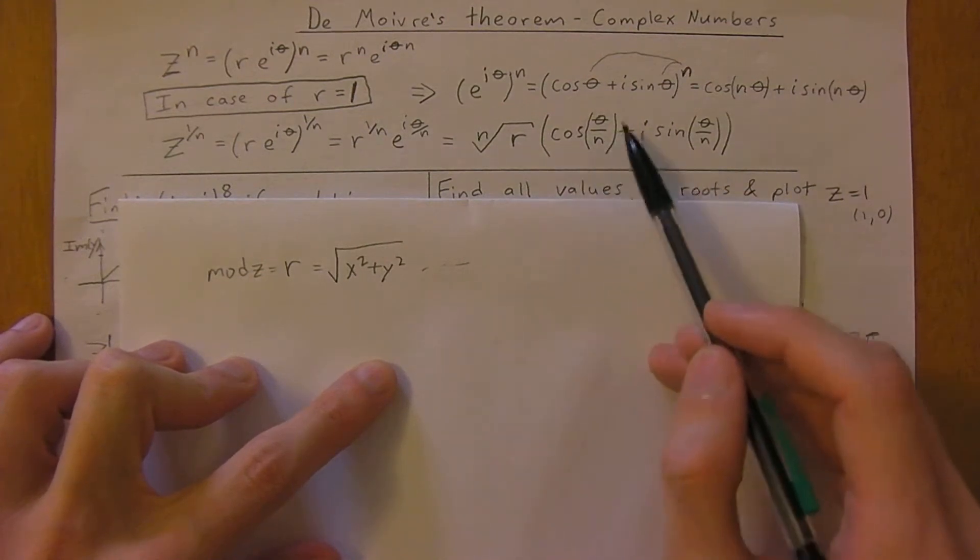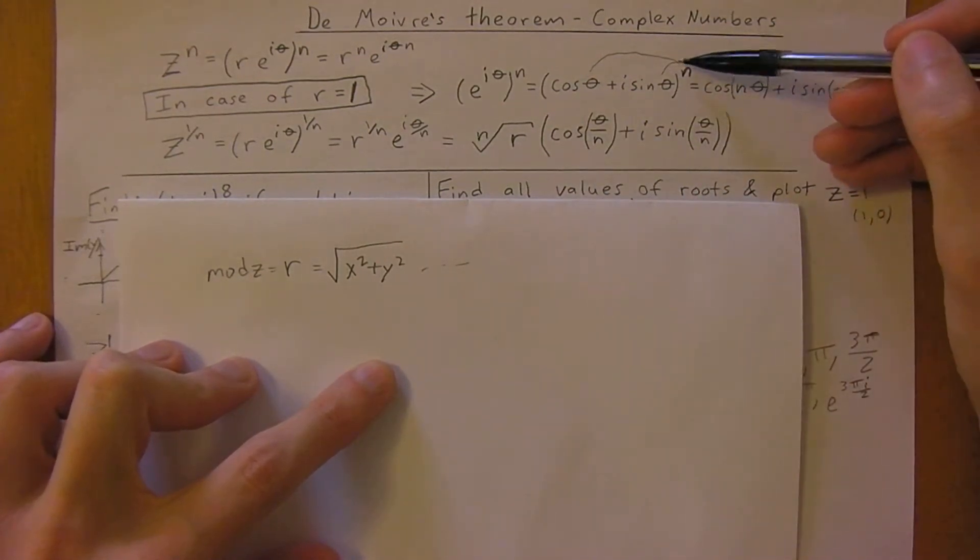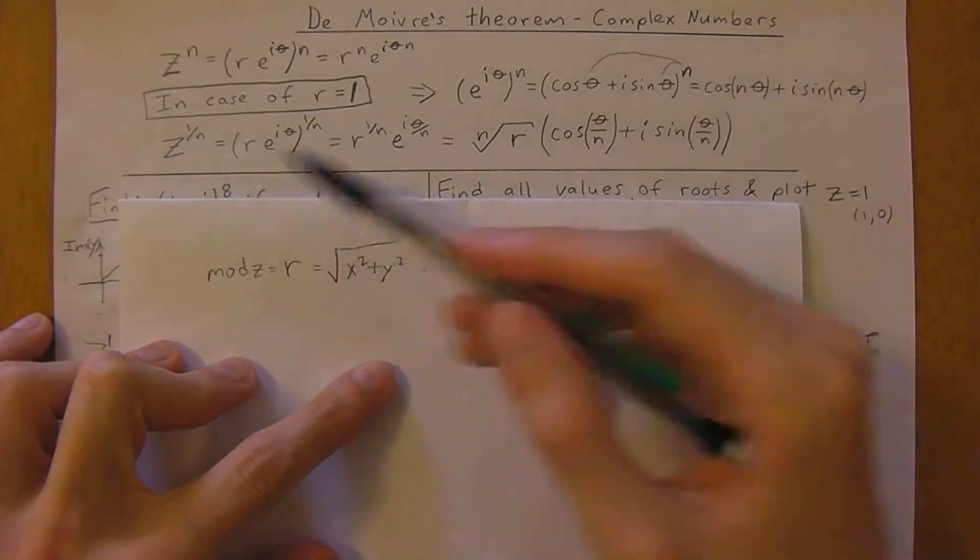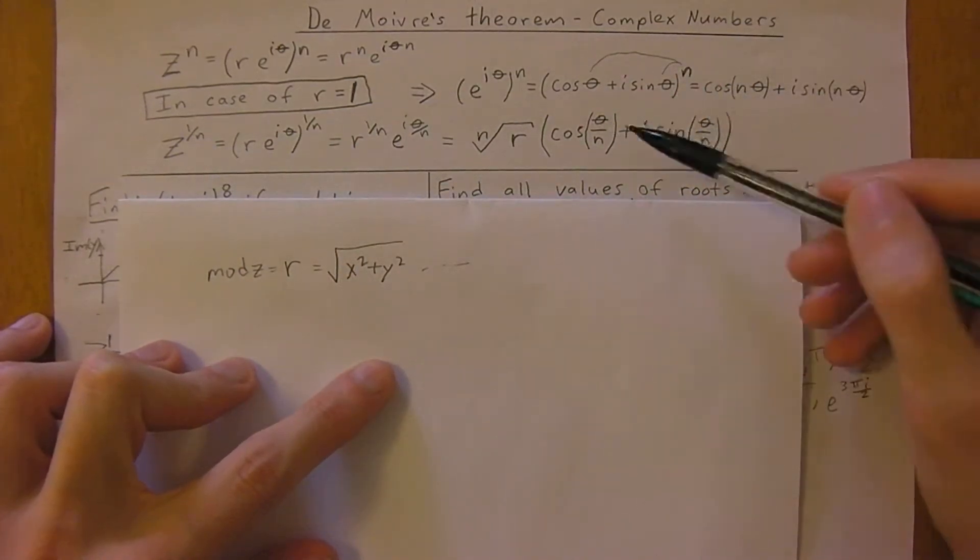This is all equal to the nth root of r, multiplied in polar form. It's the exact same thing, you just brought it inside. Except in this case we have 1 over n, so it's theta divided by n.